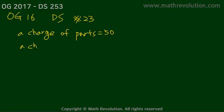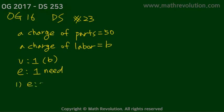Now let's take a look at Official Guide 2016 DS number 23. According to the variable approach method, we can modify the original condition. From the question, we get the charge of parts is 50. The charge of labor we can write as B. There's only one variable, B, and we need one equation to match the number of variables to equations. Condition 1 has one equation and condition 2 has another equation. So logically, there's a high chance that D is the correct answer choice.